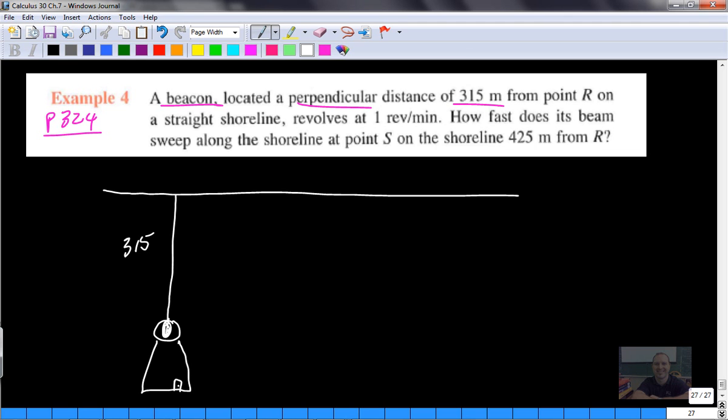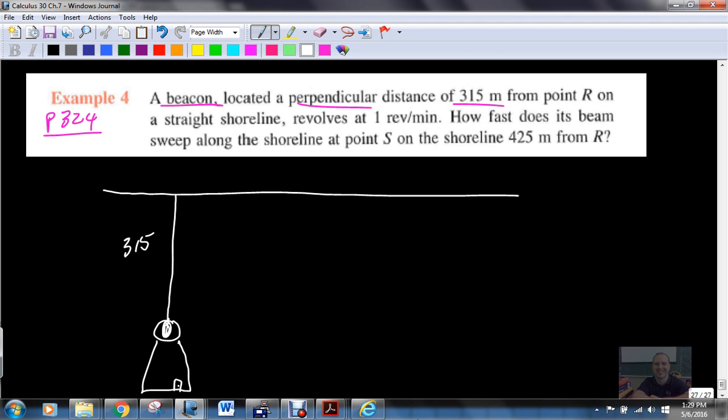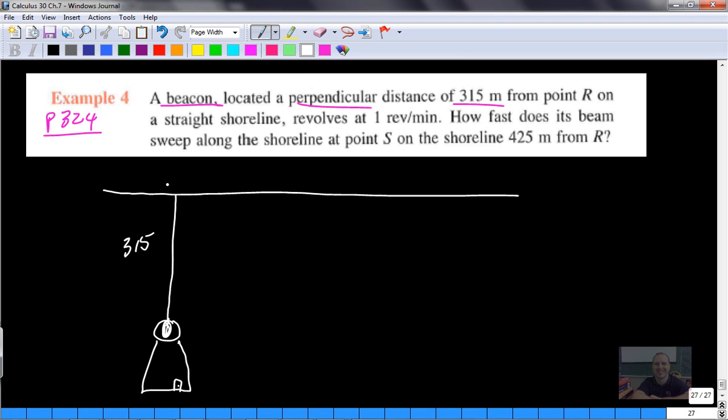We've got a light there, and it's shining. From point R on the shoreline, this is the direct 315 meter line here. It's a straight shoreline. The beacon revolves at one revolution per minute. One revolution is two pi radians,